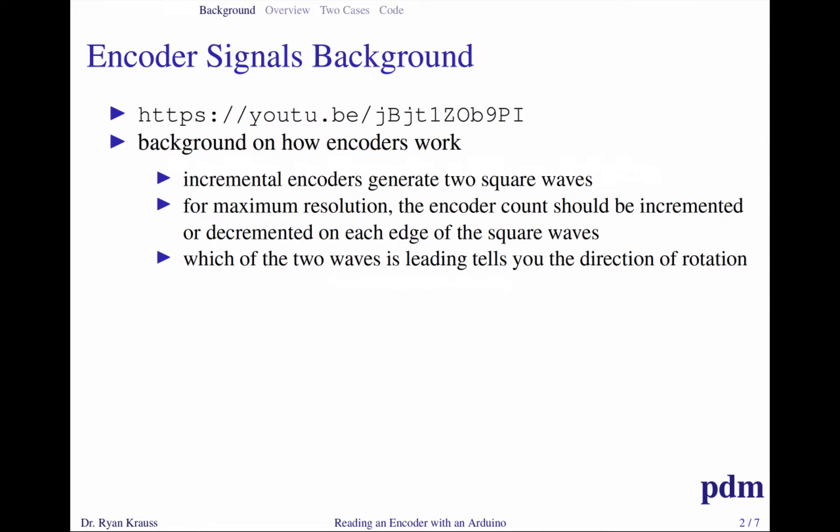You could do rising and falling edges on both channels for maximum resolution. In this video, we're just going to talk about rising A edges. We refer to the encoder signals as channel A and channel B, and the phase between them, or which one is leading, tells you the direction of rotation.